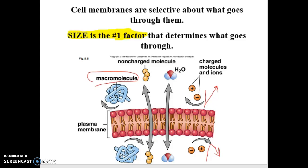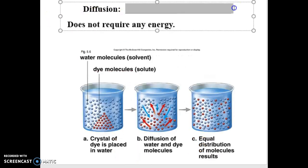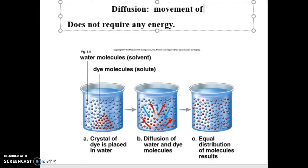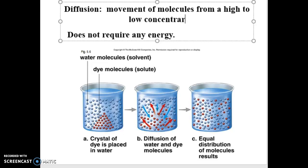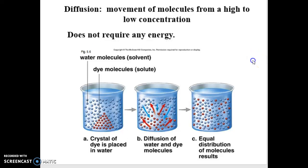The term we use for the movement of molecules is diffusion. Diffusion is the movement of molecules from a high to a low concentration. No energy is required — this is just natural molecular motion. Sugar in your coffee, the smell of cookies baking in the kitchen, spaghetti sauce spreading and staining your shirt — those are all examples of diffusion. Molecules naturally move from high concentration to low concentration without any energy source.